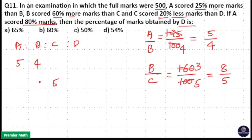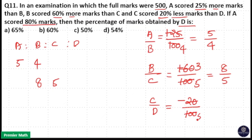If C scored 5 marks, B will score 8 marks. Same way, C scored 20% less marks than D — that is the C by D ratio. 20% less means minus 20, so if D scored 100, C will score 100 minus 20, which is 80 marks. Cancelling by 20 gives 4 by 5. So if D scores 5 marks, C will score 5 minus 1, which is 4 marks. That is 4 by 5 is the C by D ratio.